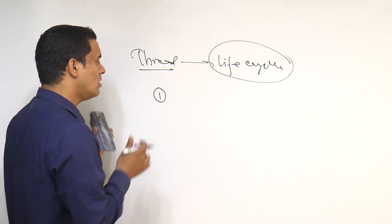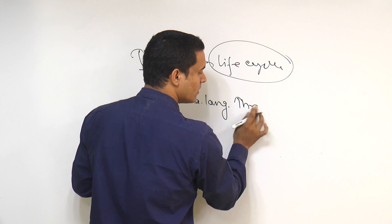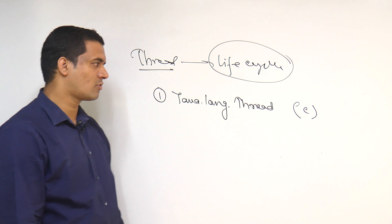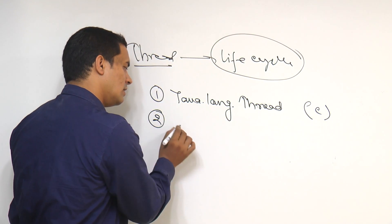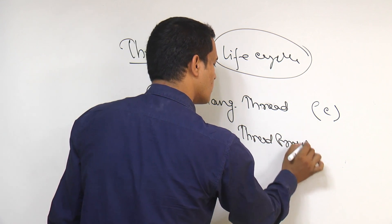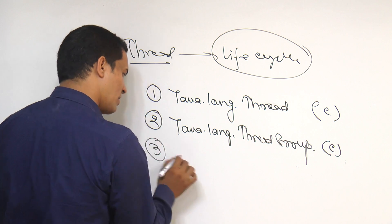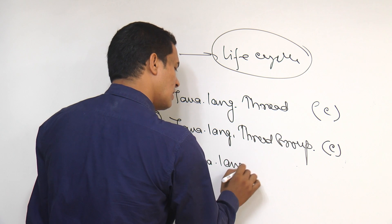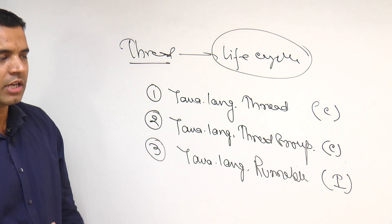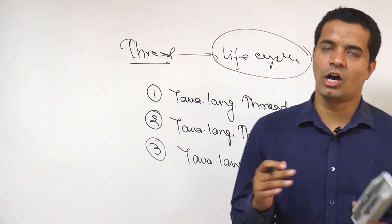Sun has provided a very large API to manage and process threads. The APIs provided are: number one, java.lang.Thread — which is a class; number two, java.lang.ThreadGroup — which is also a class; and number three, java.lang.Runnable — which is an interface. By using these corresponding APIs this thread life cycle will be managed.